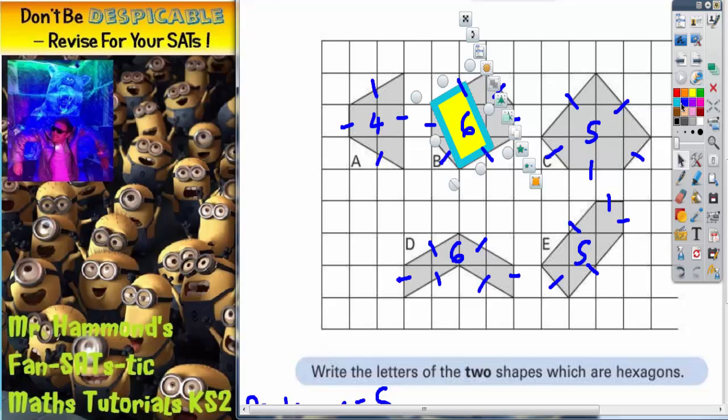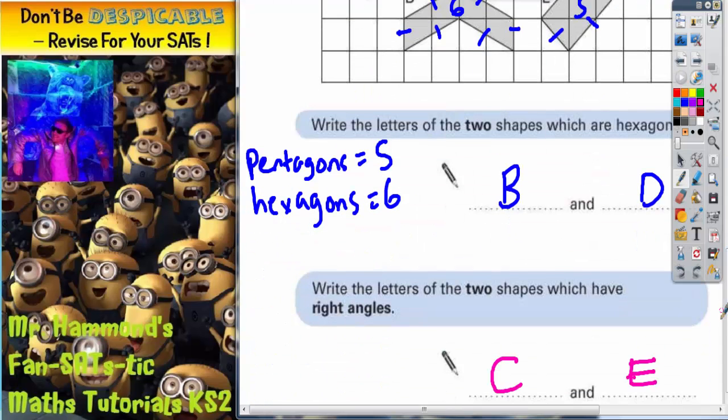But look, you can see that there is a bit of extra space in this angle here. So it's not quite a right angle. It's actually a bit bigger than a right angle. But that's how you can use the tracing paper to help you to check. So your two answers are shape C and shape E.